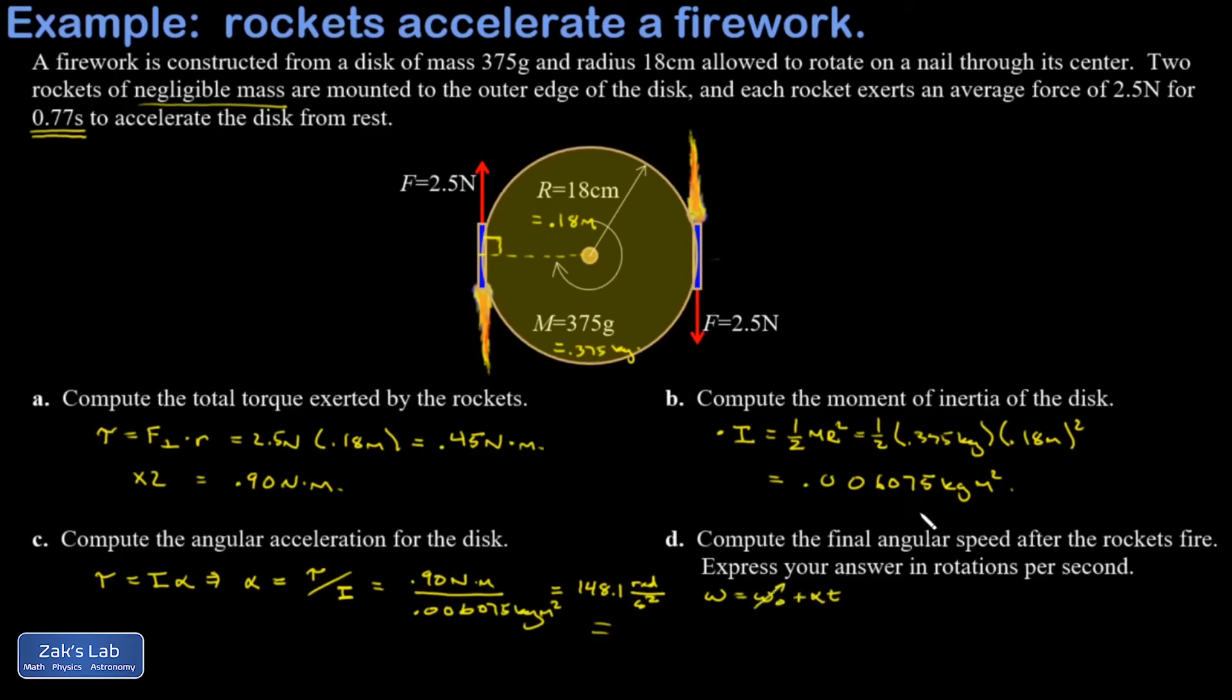I'm going to go to omega equals omega naught plus alpha T. It started from rest, so that first term is 0. I just have 148.1 radians per second squared multiplied by 0.77 seconds, and I get a final angular velocity of 114 radians per second.